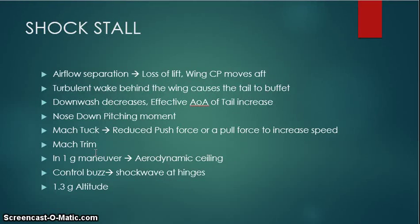In a 1G maneuver, the altitude at which the high speed stall happens is called an aerodynamic ceiling. When shock waves are formed at the control surface hinges, there is something called a control buzz that may occur and cause the control surfaces to flutter a lot. The 1.3G altitude is a design consideration. If you are flying at 1G, you are allowed to take a hit of positive 0.3G without encountering a shock stall. This is the altitude at which you can fly in 1G and not enter shock stall even if you enter turbulence which changes your G force to 1.3G.